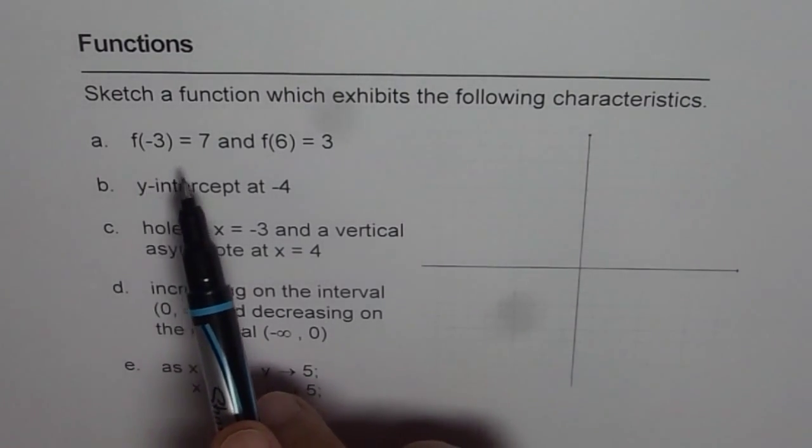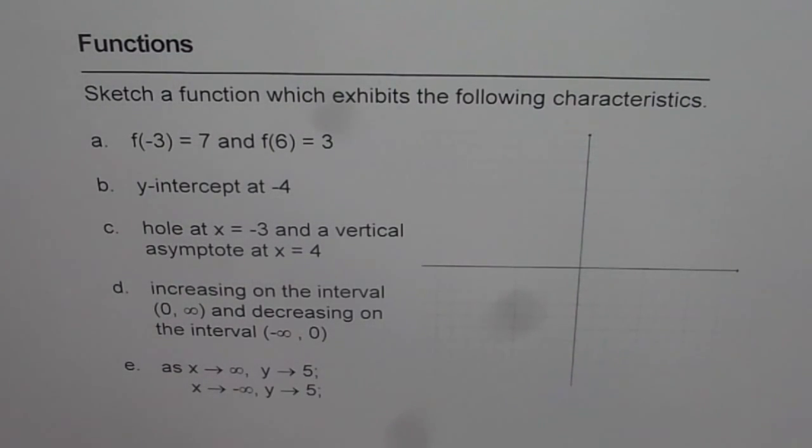f of -3 equals 7, f of 6 is 3, y-intercept is -4, hole at x equals -3, and a vertical asymptote at x equals 4, increasing on the interval 0 to infinity, and decreasing on the interval -infinity to 0.